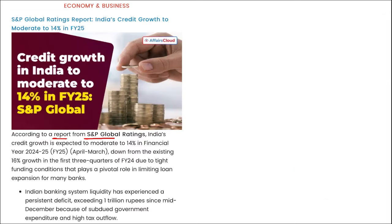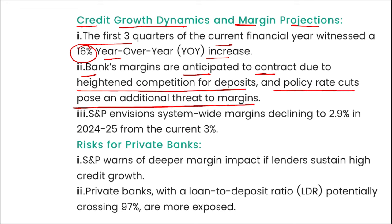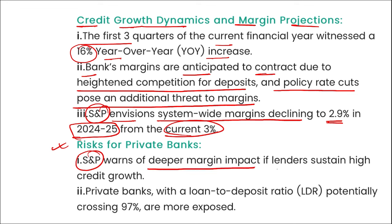According to S&P Global Ratings, India's credit growth is expected to moderate to 14 percent in Financial Year 25, down from 16 percent growth in the first three quarters of FY24, due to tight funding conditions limiting loan expansion for many banks. Credit growth dynamics: the first three quarters saw 16 percent year-over-year increase. Bank margins are anticipated to contract due to heightened competition for deposits, policy rate cuts, and S&P envisions system-wide margins declining to 2.9 percent in FY25 from the current 3 percent.